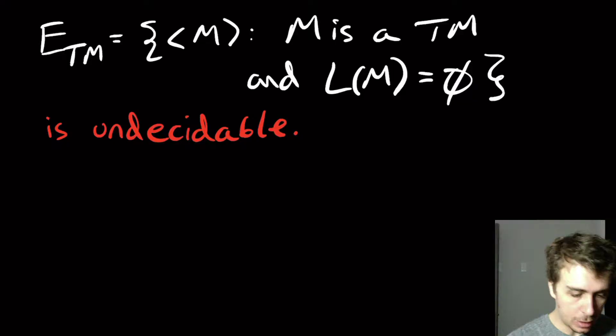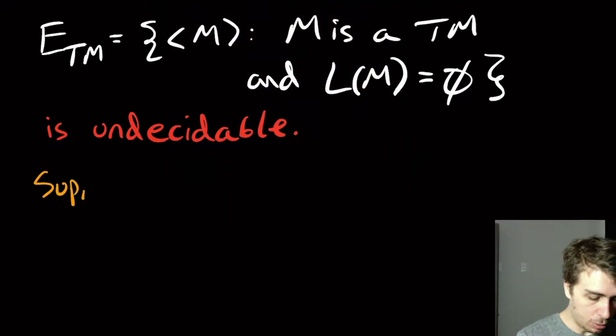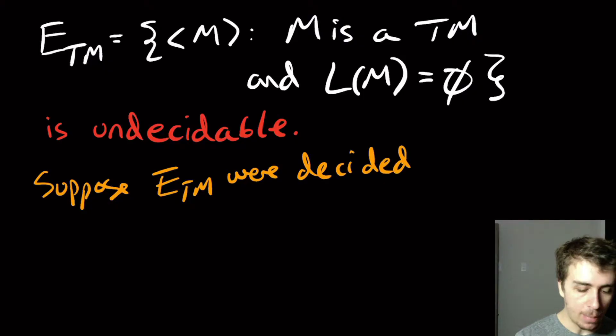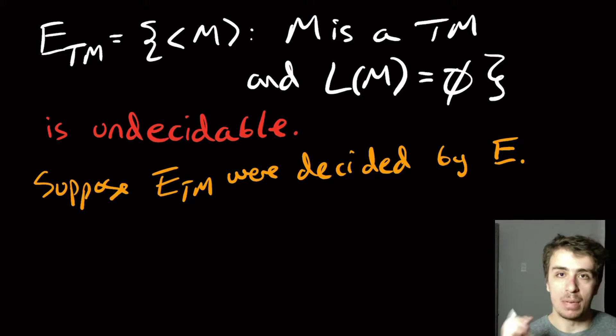And how we're going to do it is we're going to suppose ETM were decidable, and the way I'm going to write that is decided by some machine E. So I'm going to call the machine E that supposedly decides ETM, and we're going to show that this machine cannot possibly exist. It's a lot easier than the proof that we did for ATM, but we're going to use the fact that ATM is undecidable to help us prove that this machine cannot possibly exist.